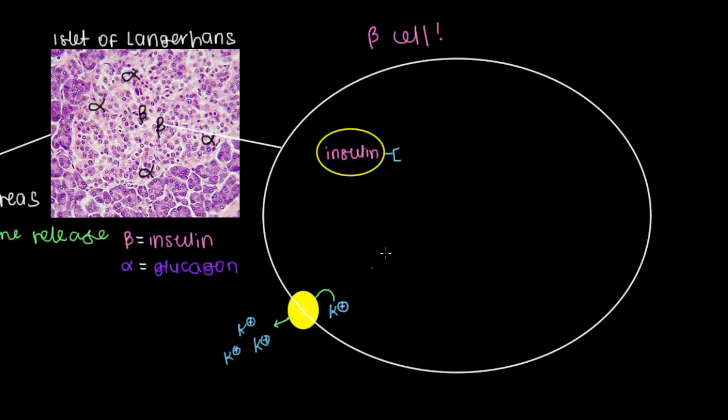Or getting a more positive charge within the cell. And this potassium channel also has a receptor on it that I promise I'll go into more detail about in a minute. But it grabs onto ATP, the basic molecule of energy.